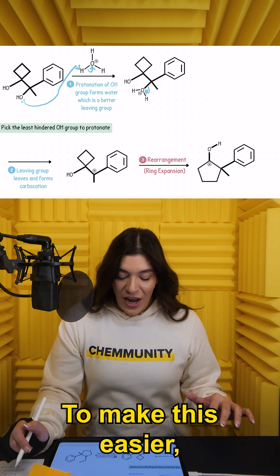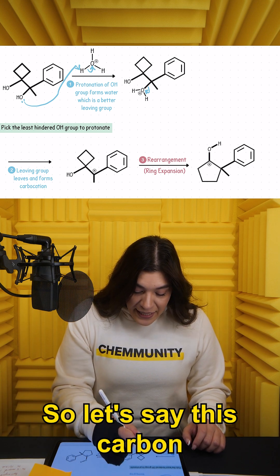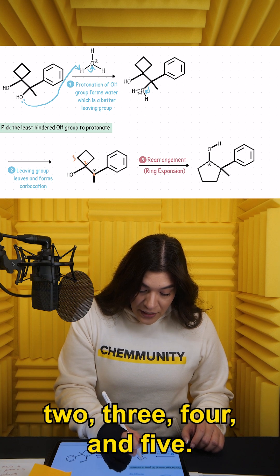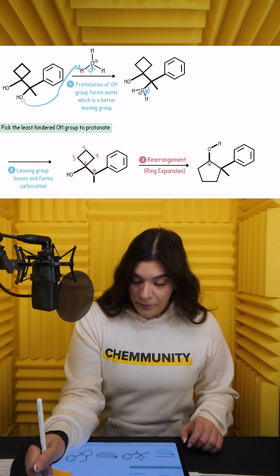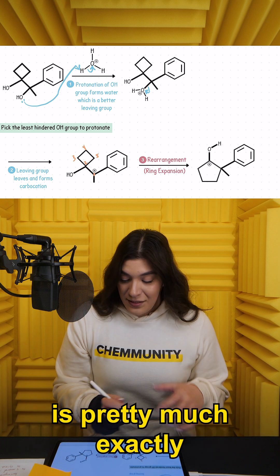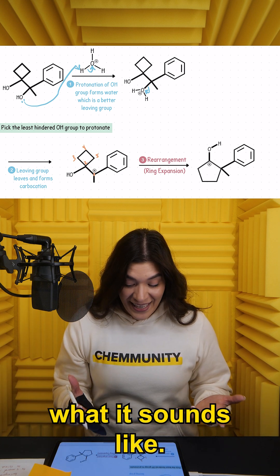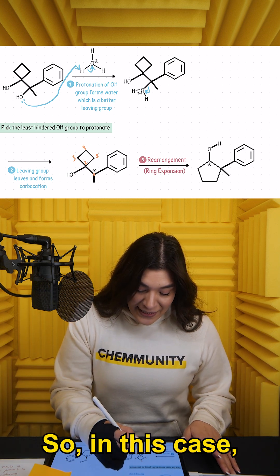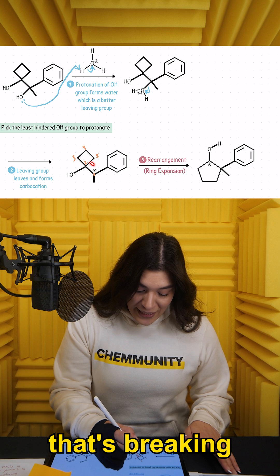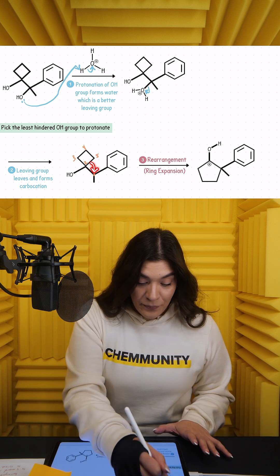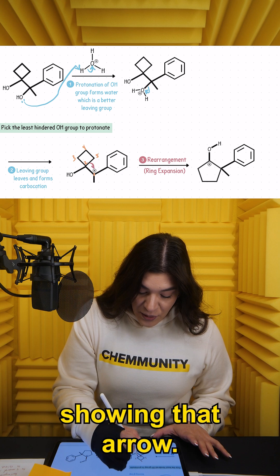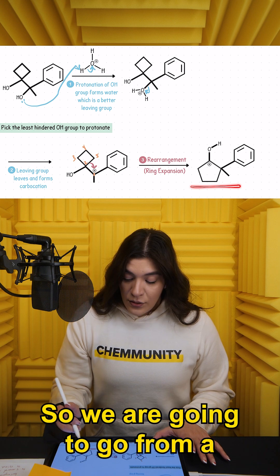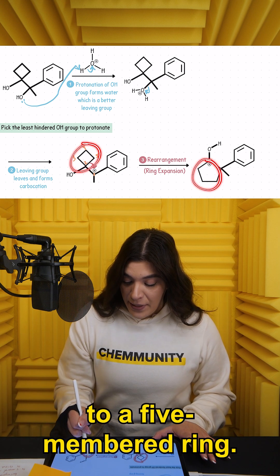To make this easier, I'm going to number it. So this carbon here is number one, this carbon here is two, three, four, and five. What happens in a ring expansion is pretty much exactly what it sounds like — we're going to make the ring bigger. In this case, it's this bond that's breaking and connecting with carbon one. Now we're going to form a larger ring, going from a four-membered ring to a five-membered ring.